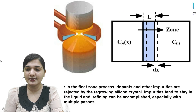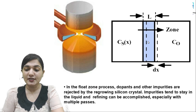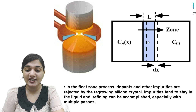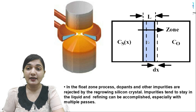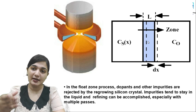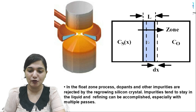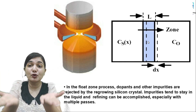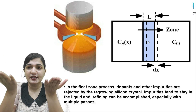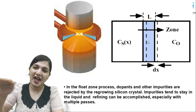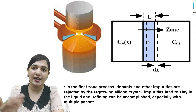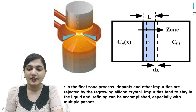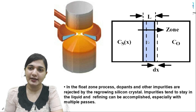Here you can see the zone — we have liquid at the interface, with solid on one side and liquid at the interface. In the float zone process, dopants and other impurities are rejected by the regrowing silicon crystal. Impurities tend to stay in the liquid, and as we move the liquid upward the impurities move upward too. At the end we can cut off that end portion and obtain a refined silicon ingot. Multiple passes can be performed for more and more refining.